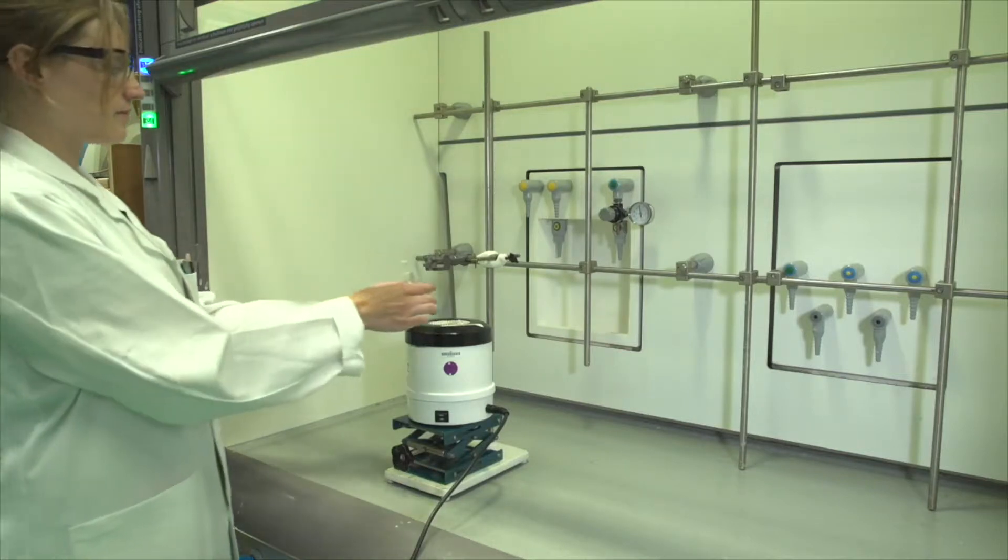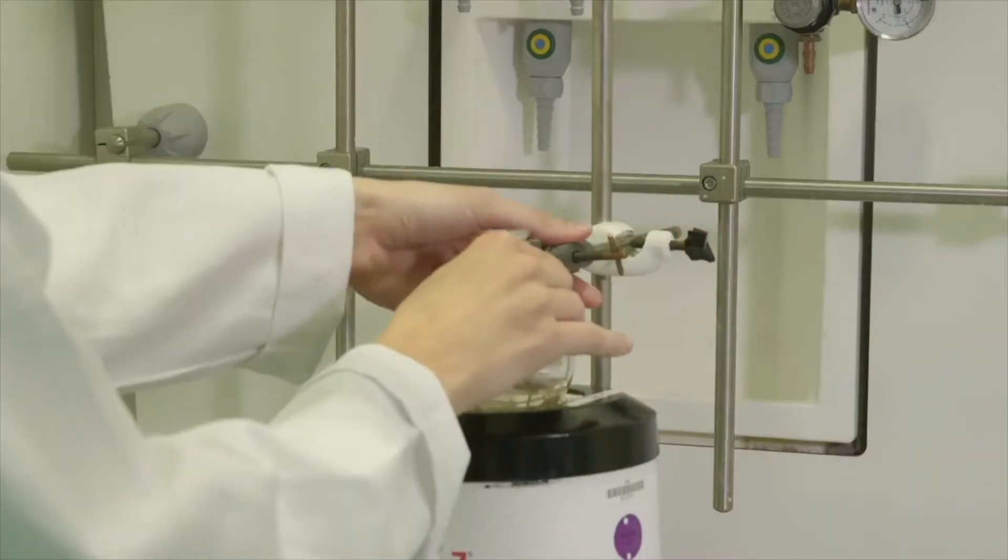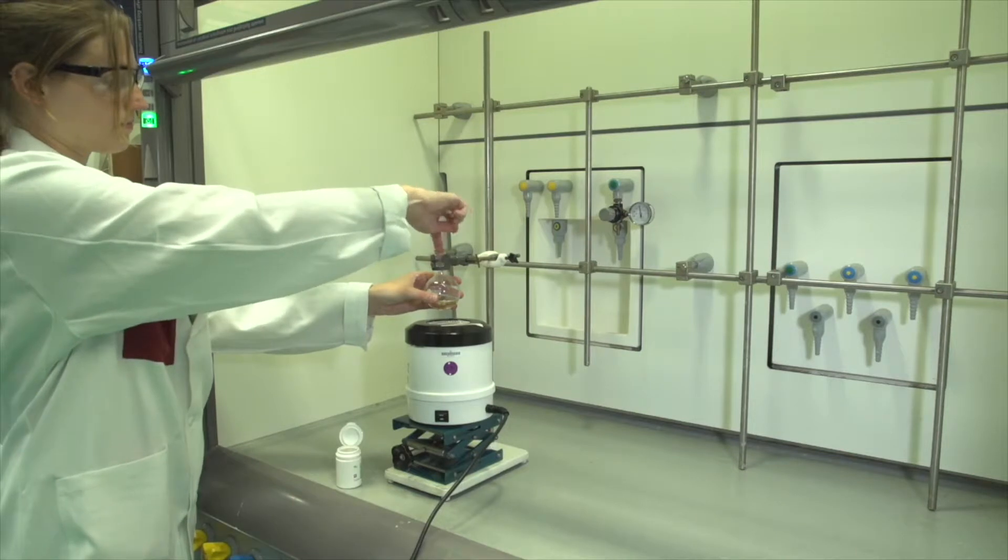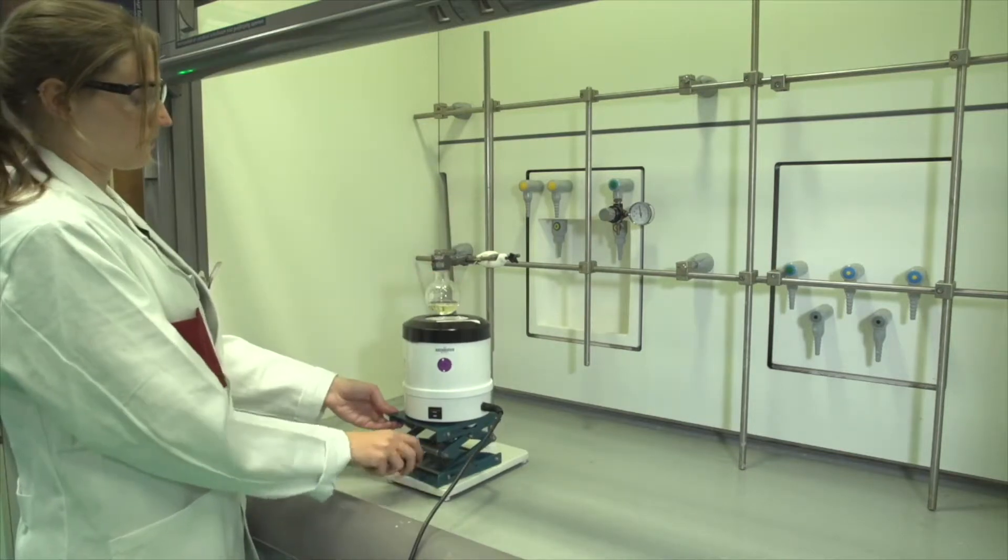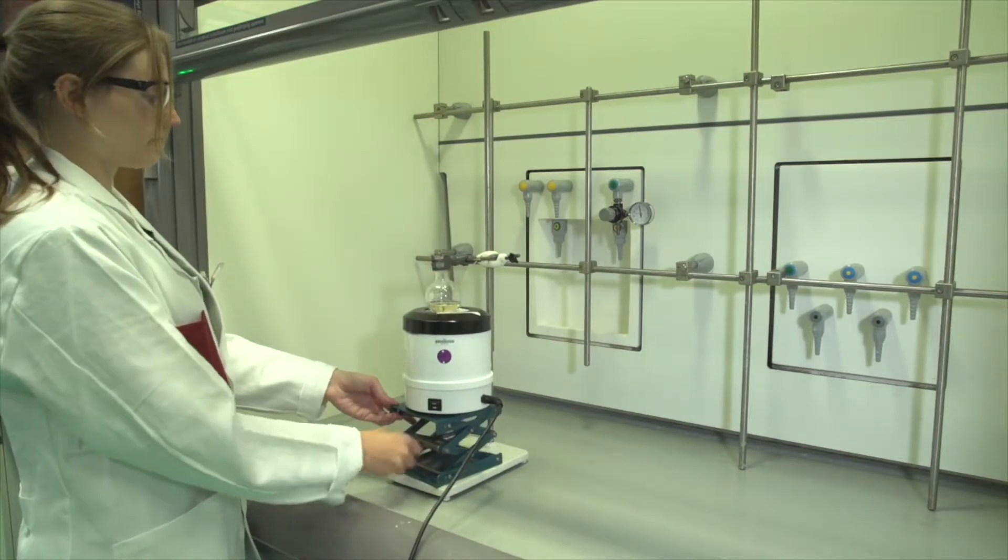The round bottom flask with the sample is fixed into the clamp and the neck is lubricated with grease. Lift the isomantle with the jack until the flask is surrounded by the isomantle.